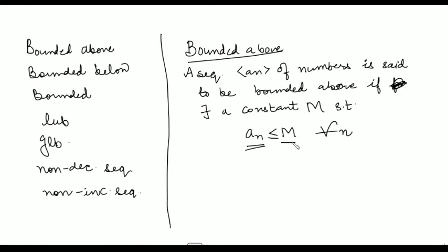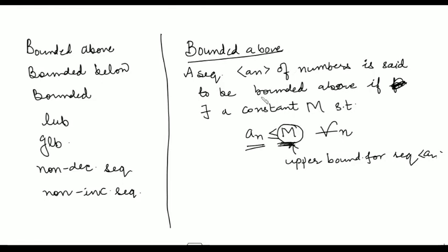So if the whole sequence is bounded from the above side by some number, then that number is said to be the upper bound for the sequence, and your sequence is said to be bounded above. If you are given any sequence of numbers, the sequence is bounded from the above side if all terms of the sequence are less than or equal to some fixed number capital M, and that capital M is said to be the upper bound for the sequence.